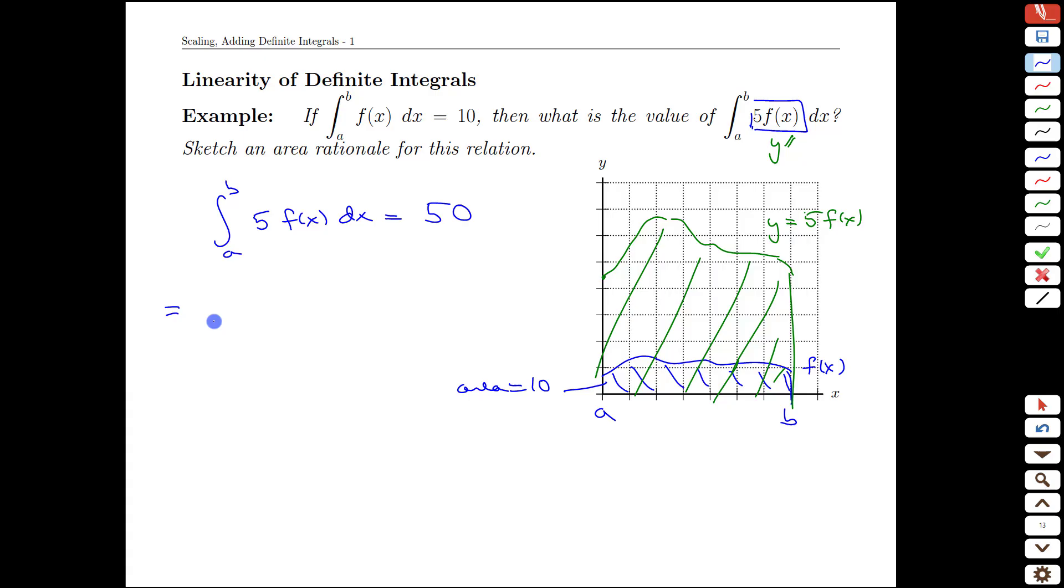To clarify the manipulations though, what we're really saying is if we have an integral from a to b of some value times f(x), what we can do is bring constant multipliers out front.